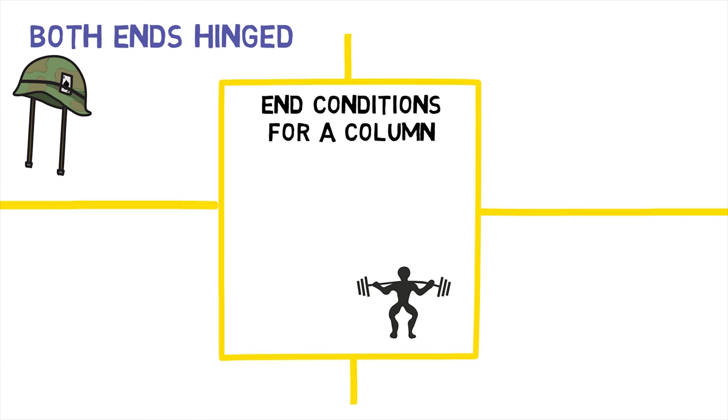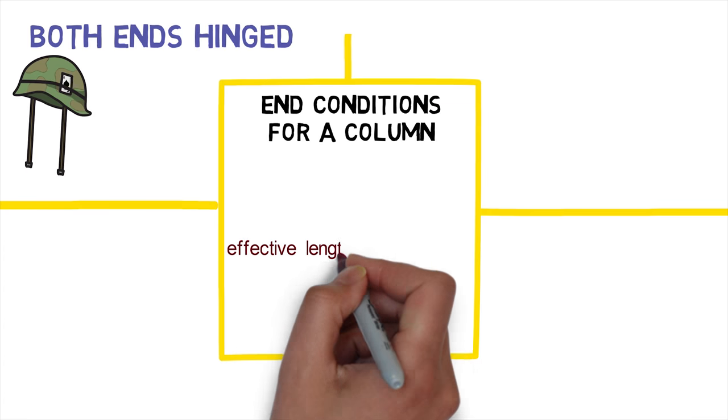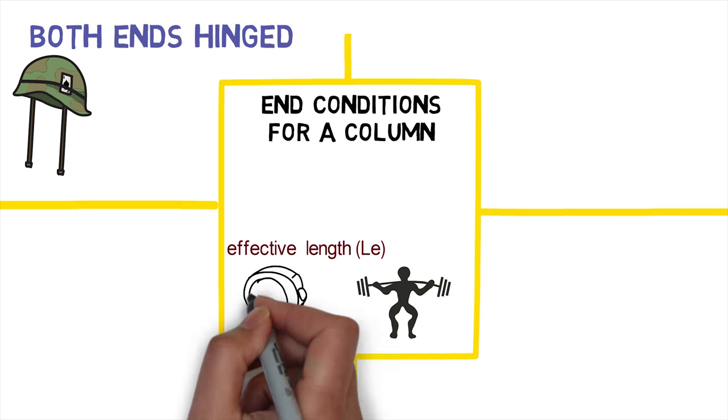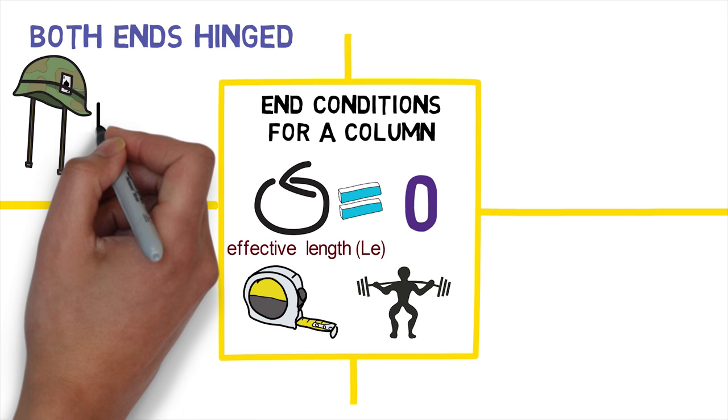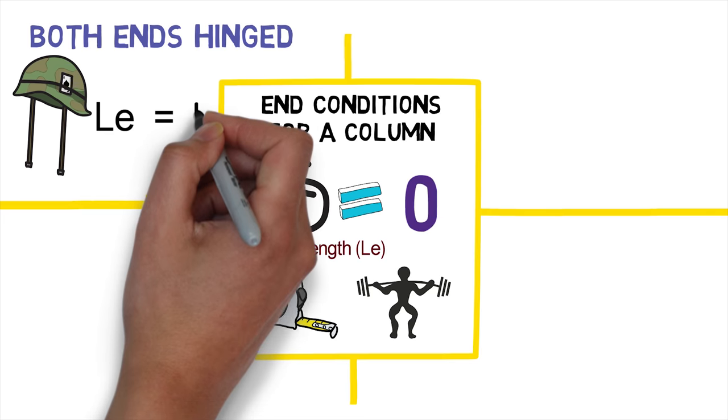As a side note, effective length of a column is defined as the distance between points of zero moment. Effective length in this condition is equal to the length of column.